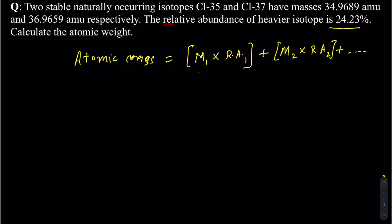These questions could be manipulated where they may give you the atomic mass and ask you for either the masses of the isotopes or the relative abundance. There are technically three types of variables: the atomic mass, the masses of the isotopes, and the relative abundance. You could be given any two of them and be asked for the third one — it's like a mathematical problem once you figure out what's given and what you have to find.